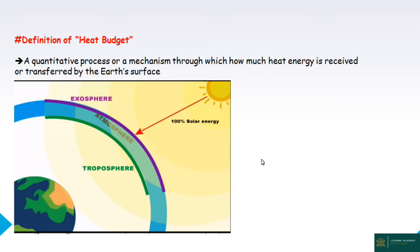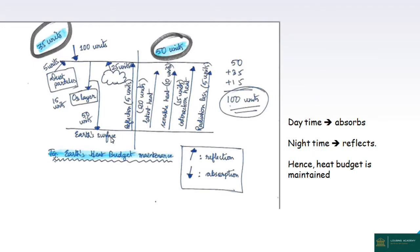This is the quantitative process or mechanism through which heat energy is received or transferred by the Earth's surface. Heat energy is received or transferred in terms of equilibrium. The heat budget involves 100% solar energy — solar insolation — and the solar system maintains the heat budget.